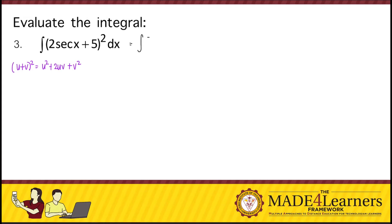So in the expansion, this will become: first you raise the first term to the power of 2, that would give us 4 secant squared x. And then for the middle term, you're going to multiply the two terms and then multiply it by 2. So 5 times 2 secant x times 2, and that would give us 20 secant x. And then the last term would be the second term of the binomial raised to the power of 2, which gives us 25.